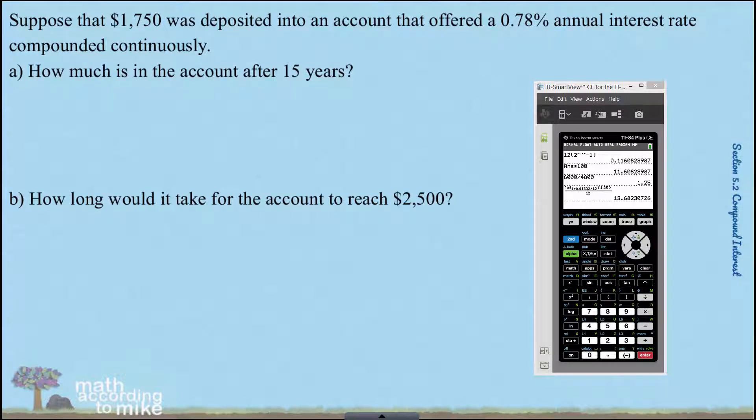Suppose that $1,750 was deposited into an account that offers a 0.78% annual interest rate compounded continuously. That one makes much more sense. How much is in the account after 15 years?